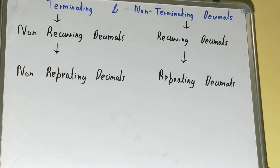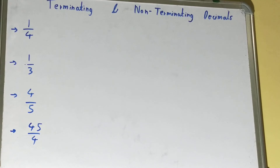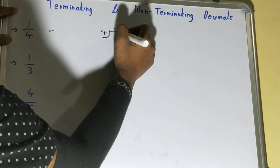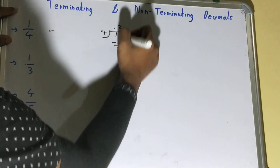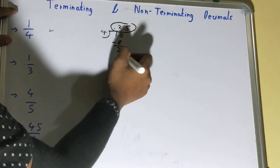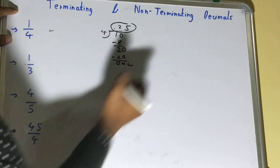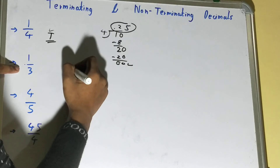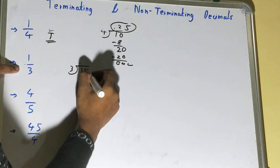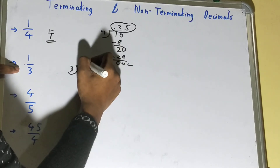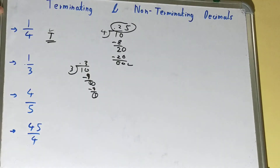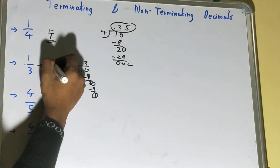Now let's see some examples and try to detect whether they are terminating or non-terminating. First: 1 divided by 4. We get 0.25 — 4 times 2 is 8, then 20, then 4 times 5 is 20 — remainder is 0. So we can say this is terminating. Next: 1 divided by 3. We get 0.3 — 3 times 3 is 9, remainder 1 — then again 3 times 3 is 9, remainder 1. We are getting remainder 1 again and again on a recurring basis, so this is non-terminating.